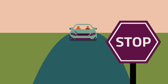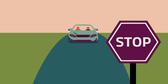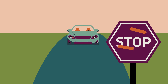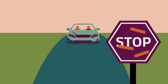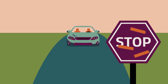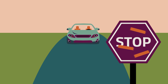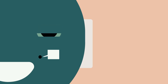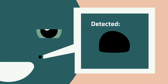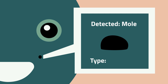Researchers showed that just adding a few pieces of tape can trick a self-driving car into misclassifying a stop sign as a speed limit sign. And researchers at Harvard were able to fool a medical imaging system into classifying a benign mole as malignant with 100% confidence.